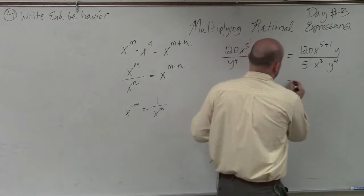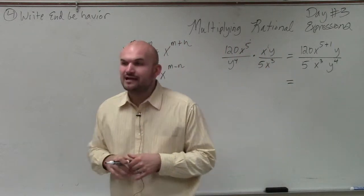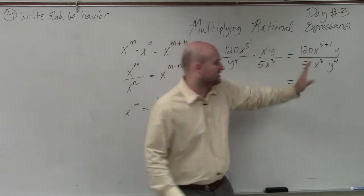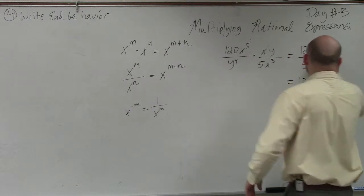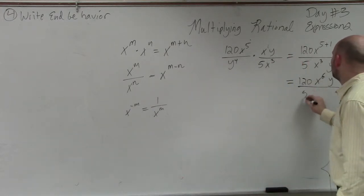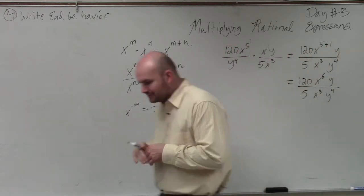OK. Now, let's simplify this. 5, now does 5, this says 120 over 5. Actually, let's simplify these first. So I have 120, x to the 5 plus 1 is x to the sixth times y, divided by 5, x to the third, y to the fourth. OK. So now my rational expression is simplified.